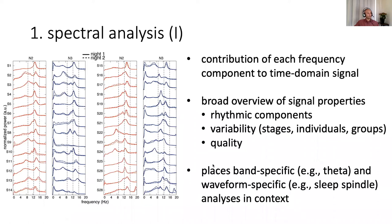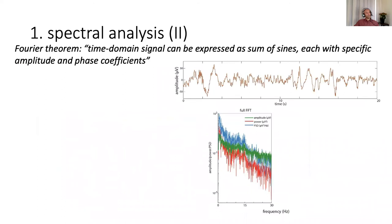Another big reason why I like looking at these plots is because it places band-specific or waveform-specific analyses in context. Imagine, for example, that you're interested in theta power and you found a difference between groups in theta power. It's entirely possible that the theta effect isn't specific to theta, but rather it's indicative of a broadband difference between your groups across frequency bands. You would never realize this if you would only look at theta.